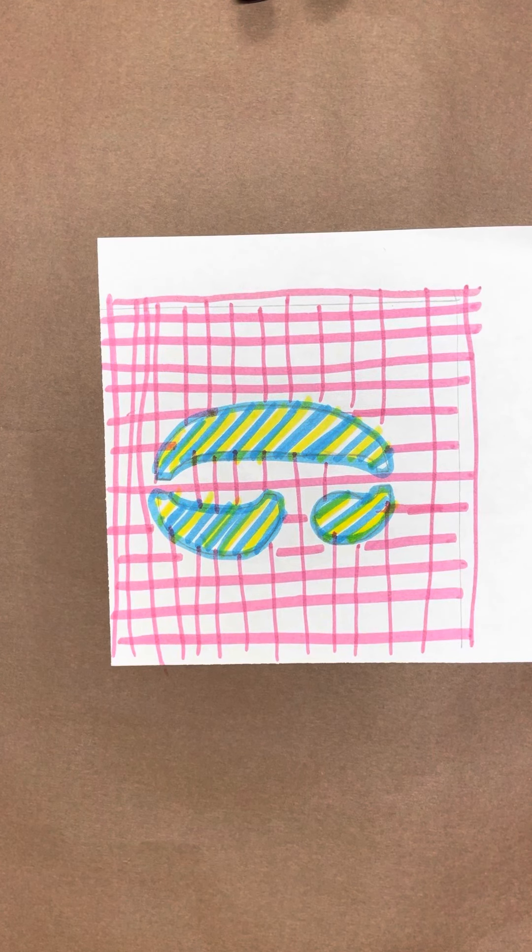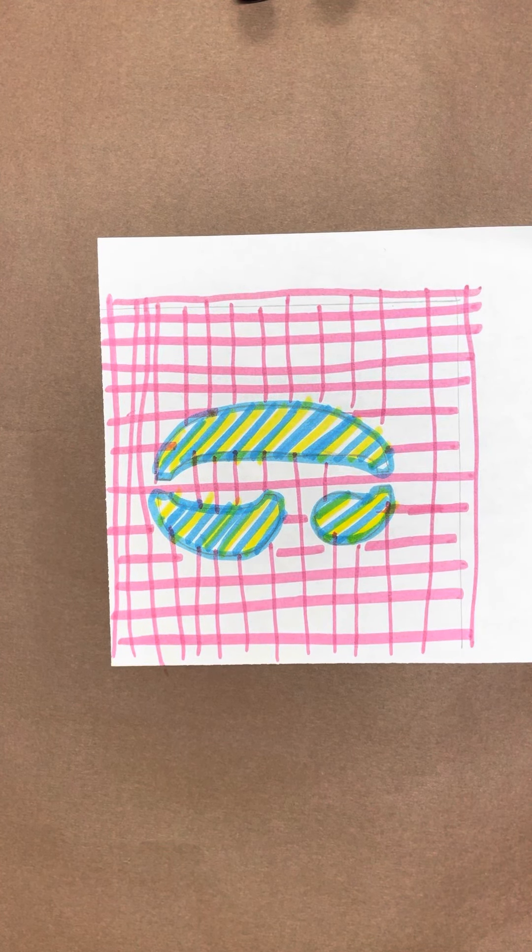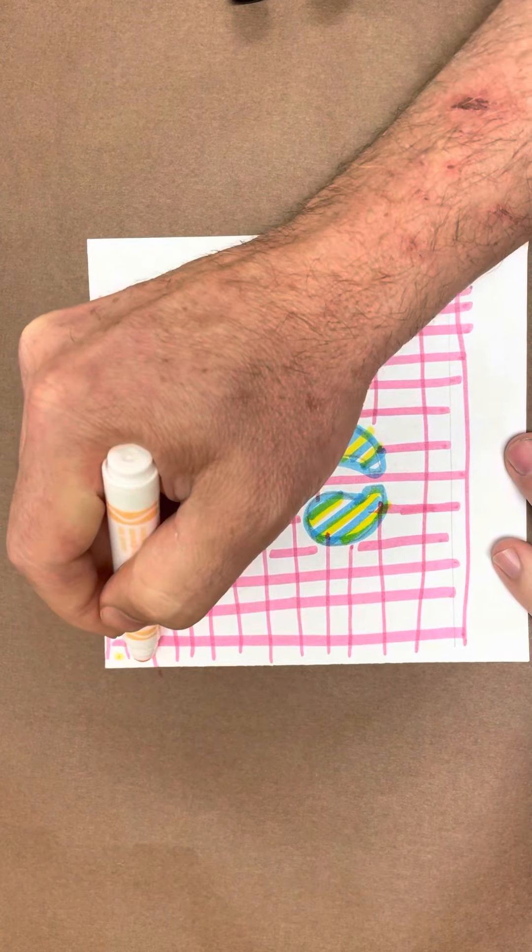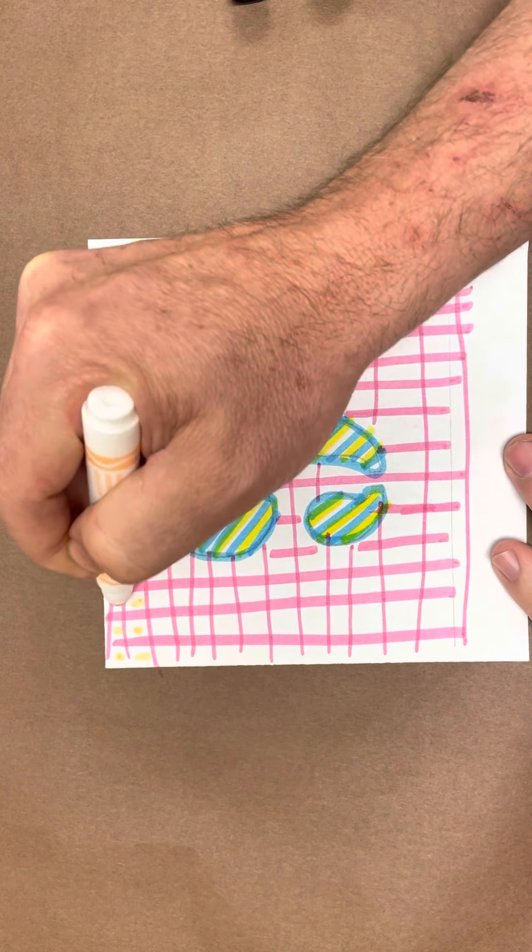Now I'm going to pick whatever colors I want to go in between all this. Maybe I'll do these little dots like this all the way through.